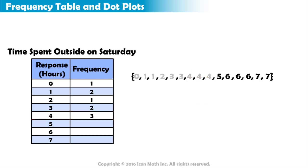The frequency of the response five is one person. The frequency of the response six is three people. And finally, the frequency of the response seven is two.